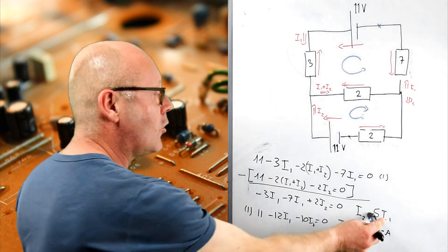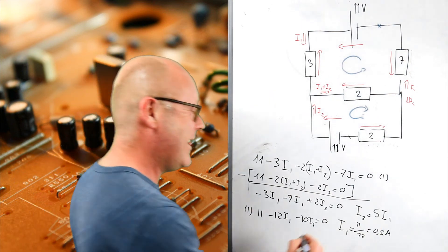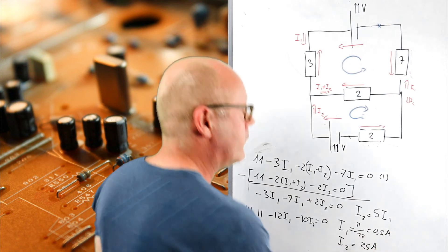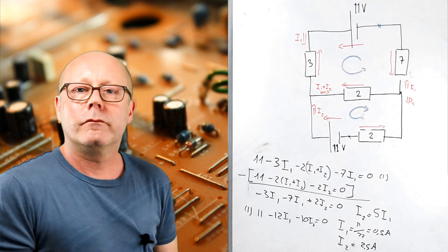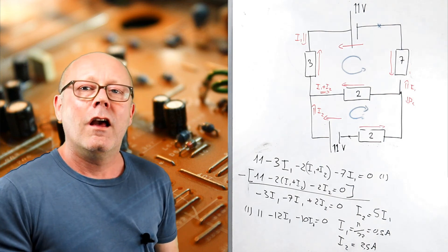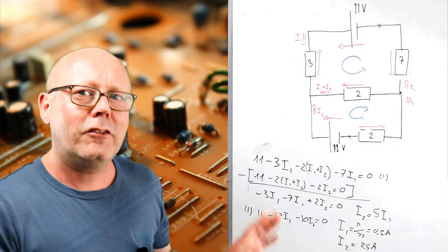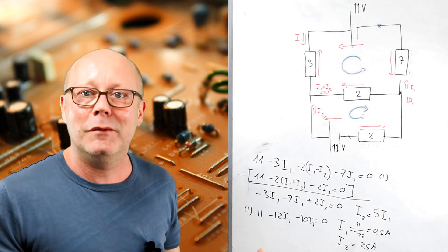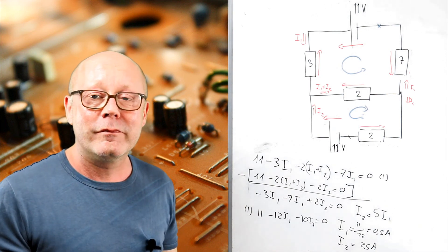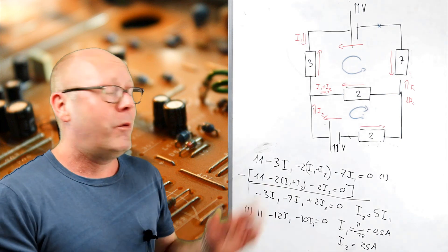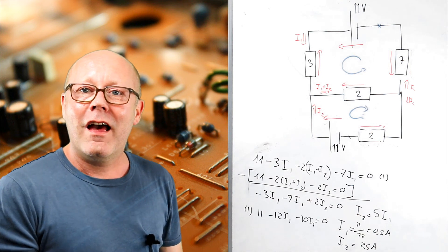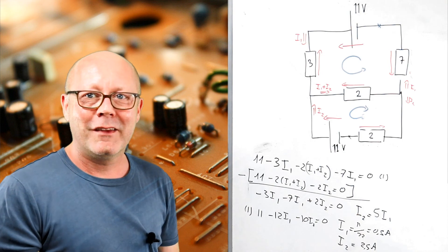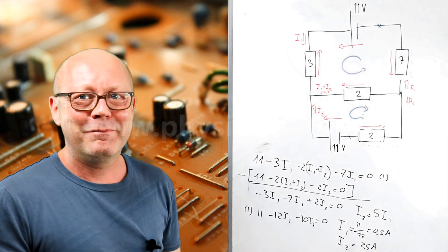I've got I1. Well, I2 is not going to be very difficult to find. I2 will be equal to 2.5 amps. You see, so, it looks complicated. But, in the end, it's very simple. It's just a system of two simultaneous equations. I hope this was useful to you. And, if it was, please subscribe. Many more videos to come. See you. Bye.